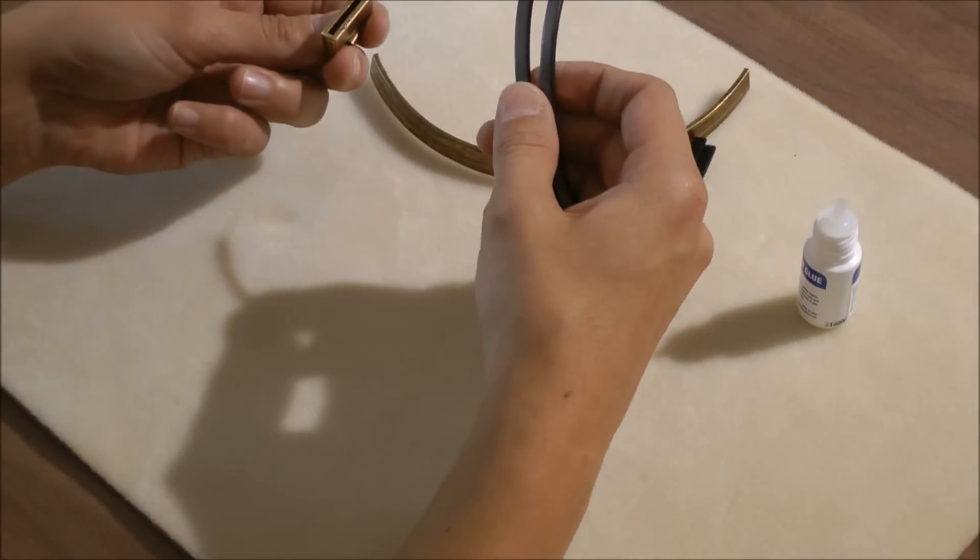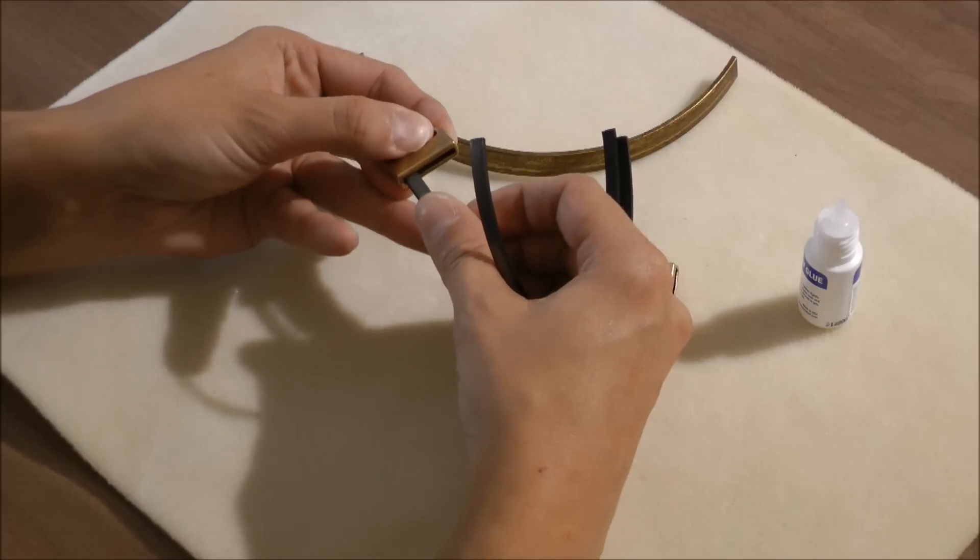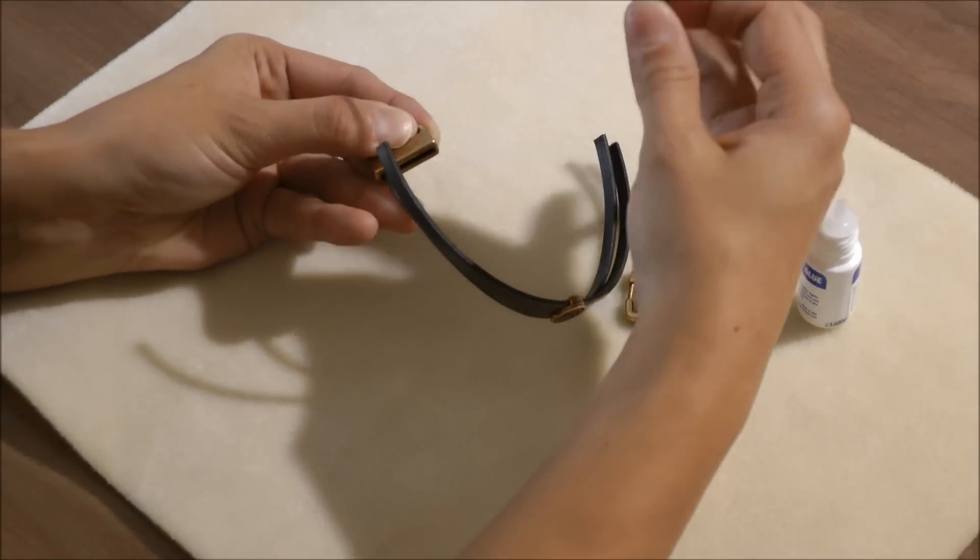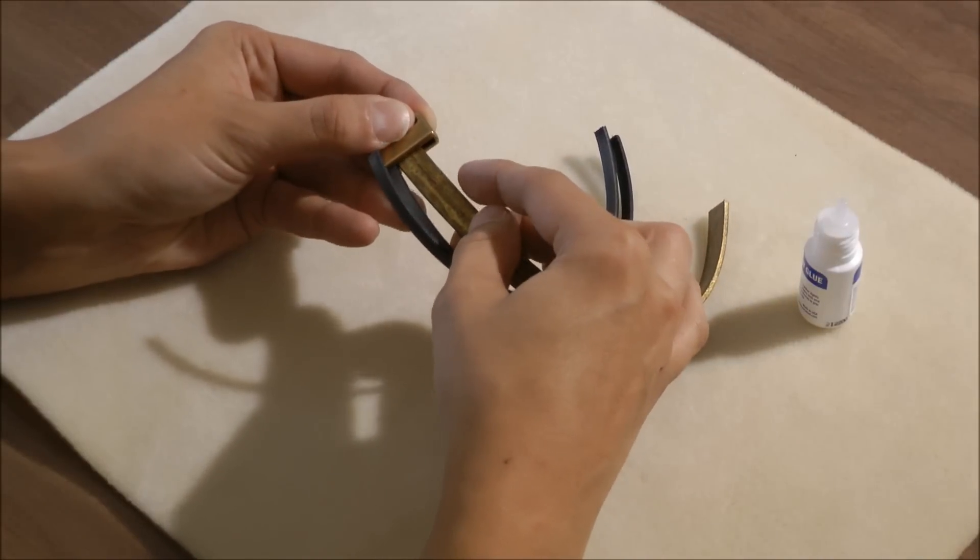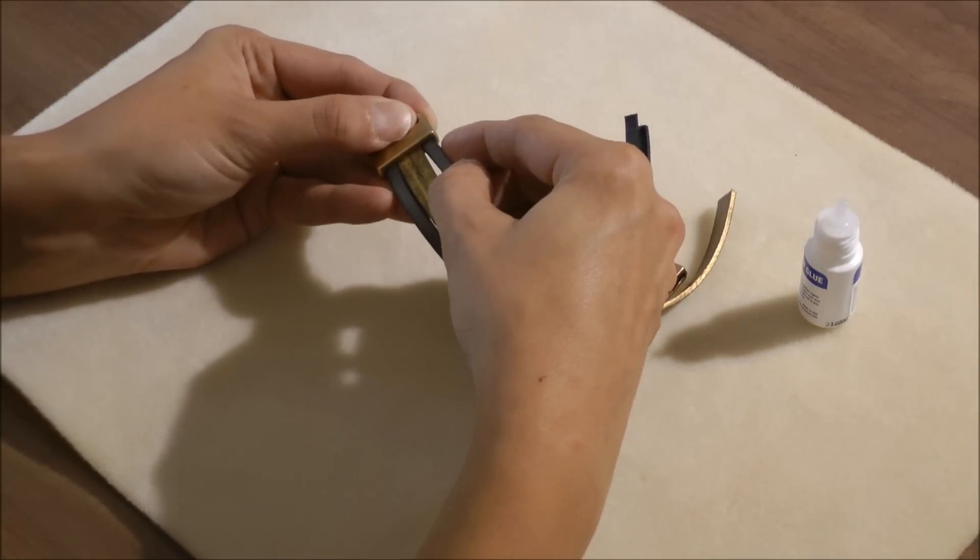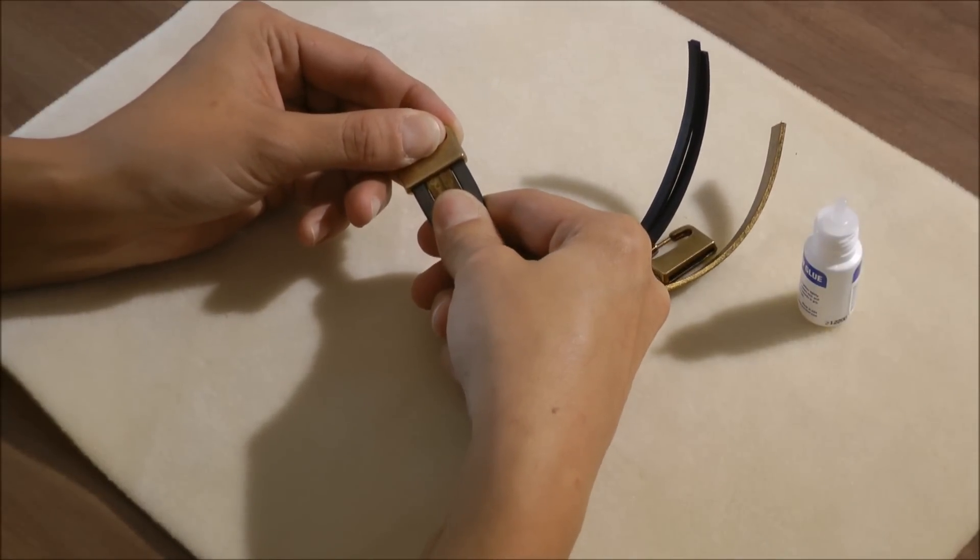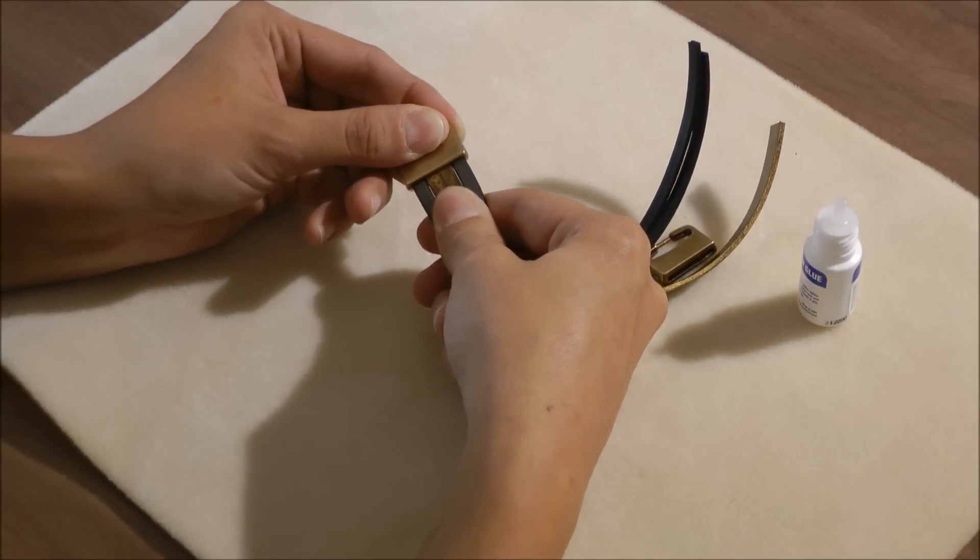Next, I'm going to take one piece of the gray leather, slide it in, the gold leather, slide it in, and then the other piece of the gray leather. I'm going to hold on to these just for a few seconds until I know that they've bonded.